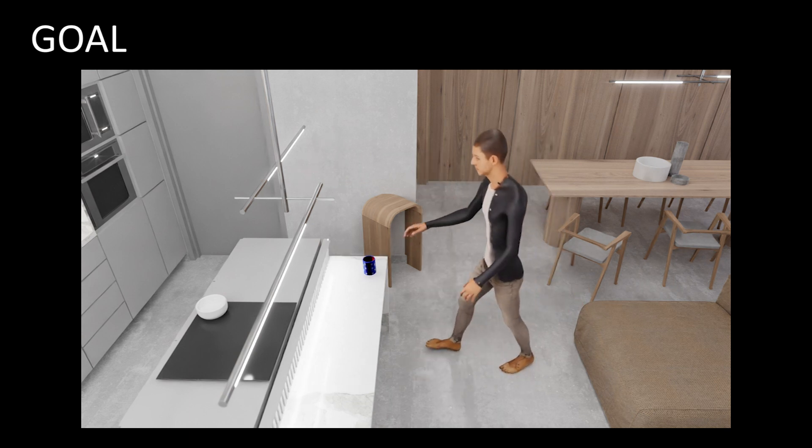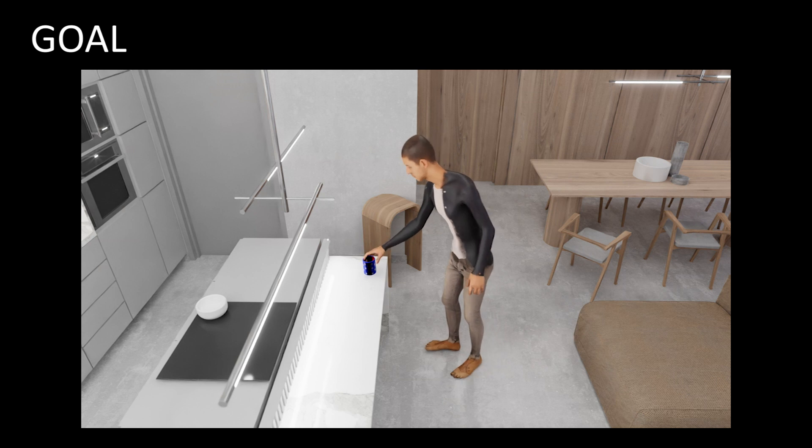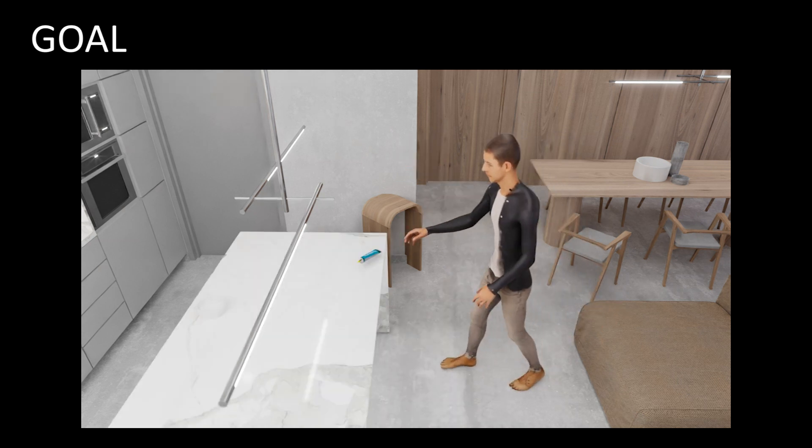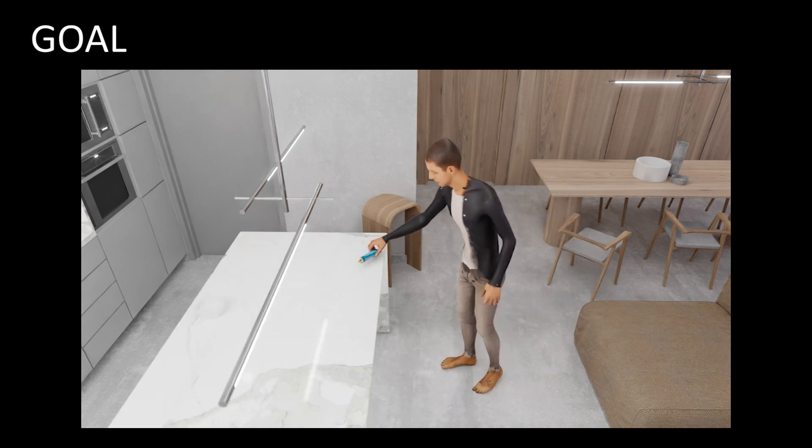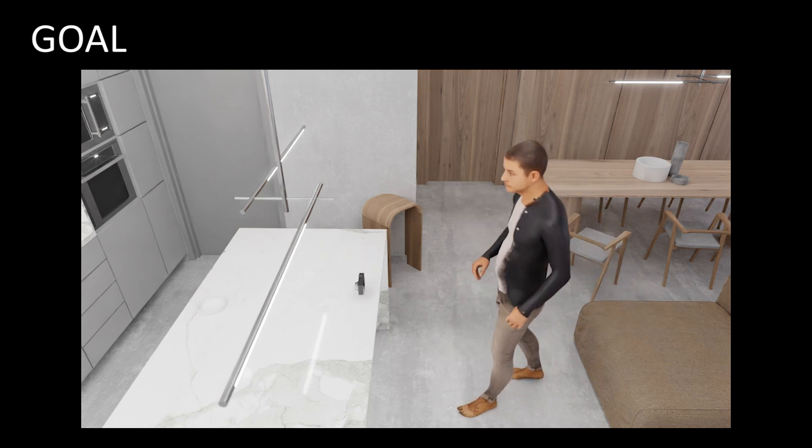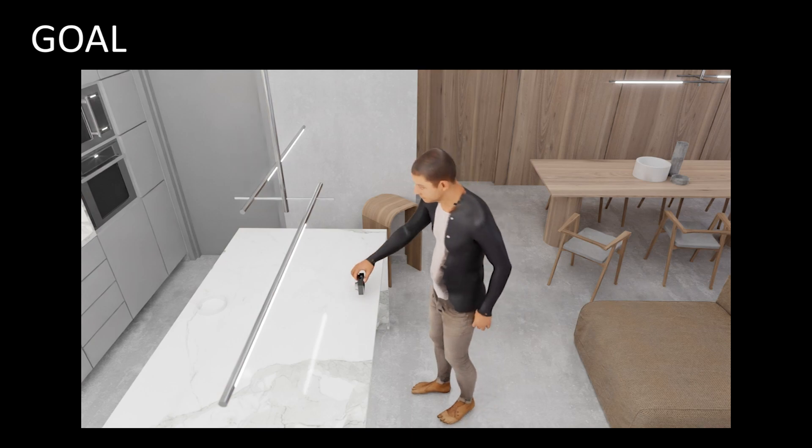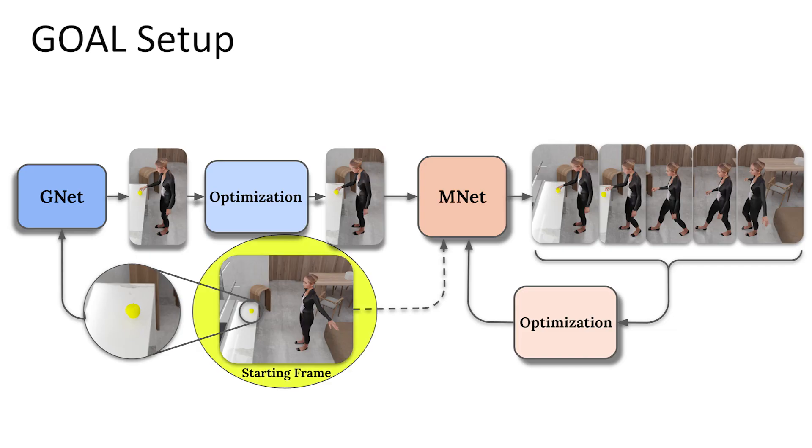GOAL generates the whole-body motion of an avatar grasping an unknown object by jointly synthesizing the motion of the body, head, and hands, while taking into account the object shape and the ground plane. As input, GOAL takes a previously unseen 3D object, its position, and a starting 3D body shape and pose. As output, it produces a sequence of whole-body poses.